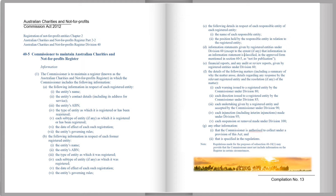The matters include: 1. Each warning issued to a registered entity by the Commissioner under Division 80. 2. Each direction issued to the registered entity by the Commissioner under Division 85. 3. Each undertaking given by a registered entity and accepted by the Commissioner under Division 90. 4. Each injunction, including interim injunction, made under Division 95. 5. Each suspension or removal made under Division 100.